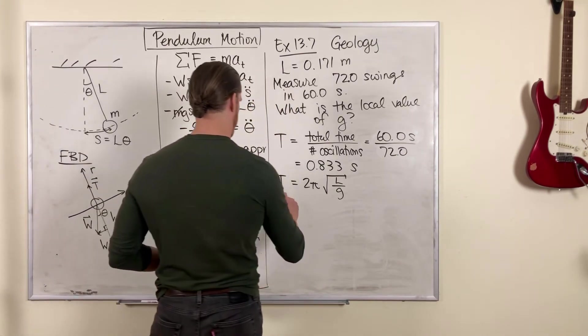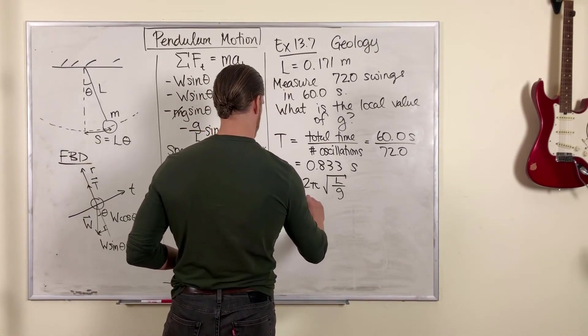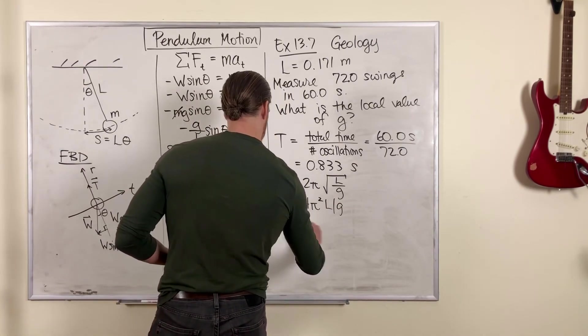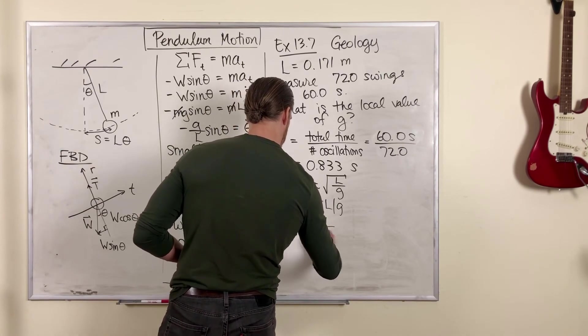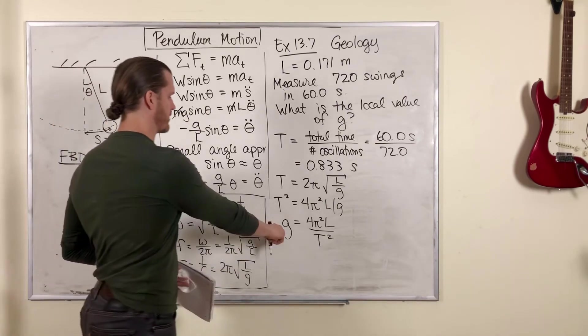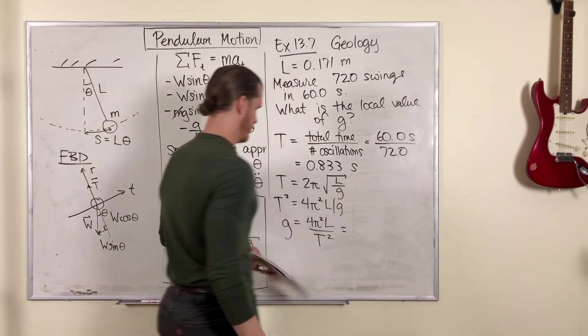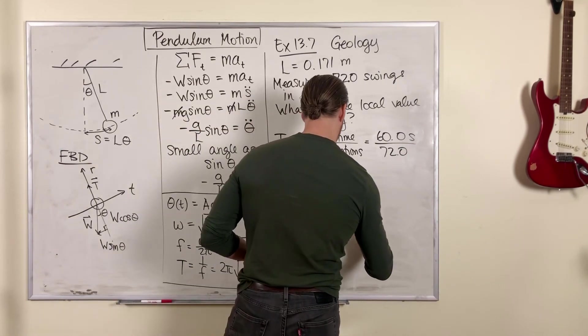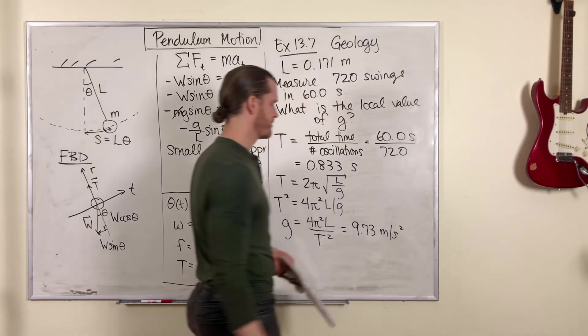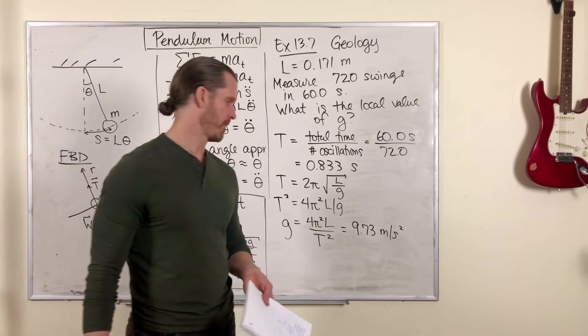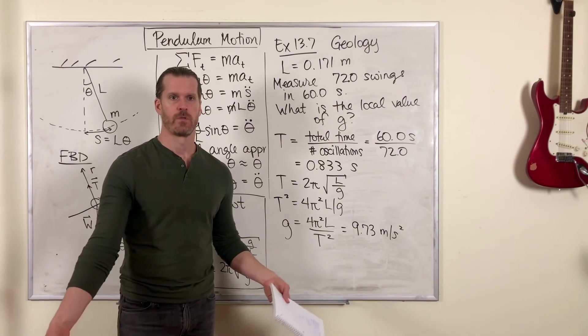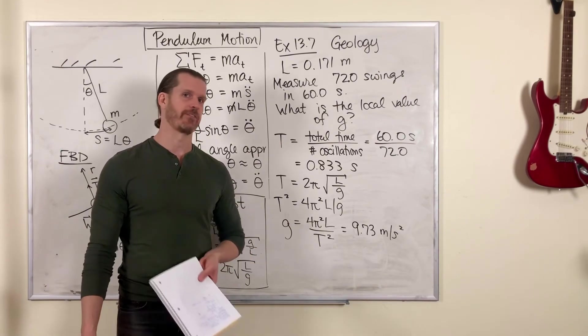We'll turn this around with a little algebra, square both sides, move things around we have an expression now for g. Plug in the numbers and it gives you a value that's a little bit less than the usual value of g, 9.73 instead of 9.8. So to a geologist that would be an indication that underneath you the ground is less dense than usual.